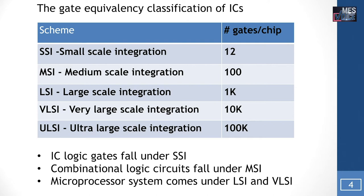In small-scale integration, the number of gates included in a chip is less than 12. In medium-scale, it is less than 100. In LSI, the number of gates varies between 100 and 1K. In VLSI, it varies from 1K to 10K. In ultra-large-scale integration, it varies from 10K to 100K. Normally, IC logic gates come under SSI, digital combinational logic circuits fall under MSI, and microprocessor systems come under LSI and VLSI.